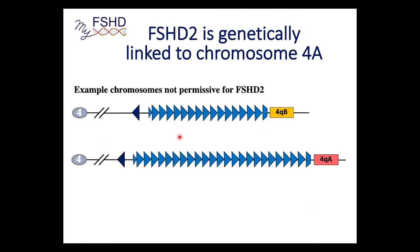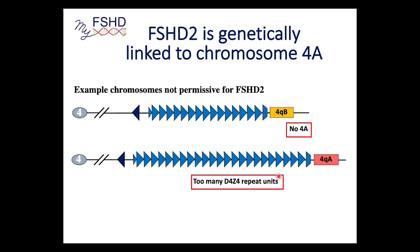There are of course non-permissive FSHD chromosomes. For example, if you are 4qB/4qB, you can't have FSHD1, FSHD2, FSHD3, 4, or 5 — you need the 4qA in order to make the pathogenic DUX4 gene. You can also have too many repeat units to be FSHD2.